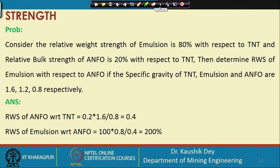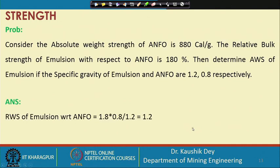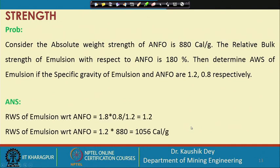This conversion between relative bulk strength and relative weight strength — or in other cases absolute bulk strength to absolute weight strength — is possible in both cases, as seen from this problem. Now let us look at another problem to understand how to convert between absolute strength and weight strength. In this problem: the absolute weight strength of ANFO is given as 880 calories per gram.